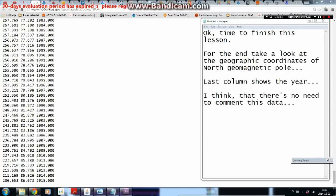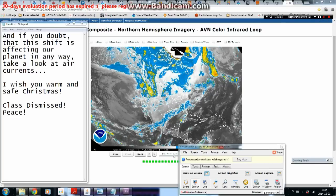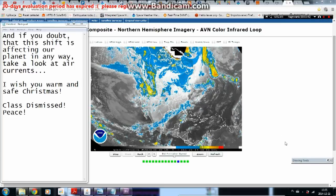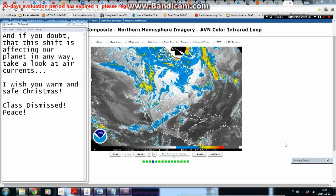Okay, time to finish this lesson. For the end, take a look at the geographic coordinates of North Geomagnetic Pole. Last column shows the year. I think that there is no need to comment this data. And if you doubt that this shift is affecting our planet in any way, take a look at air currents.